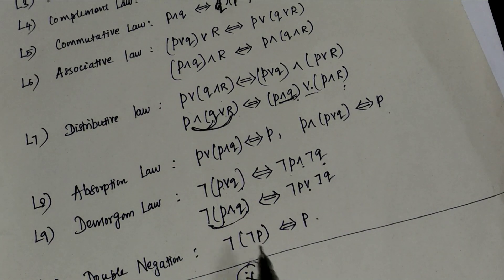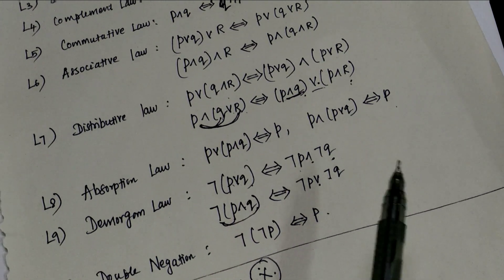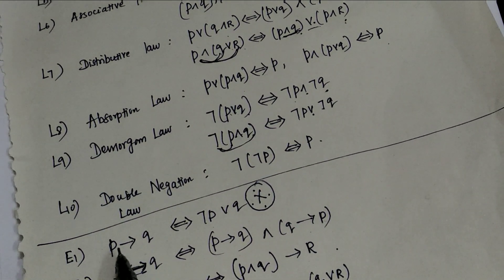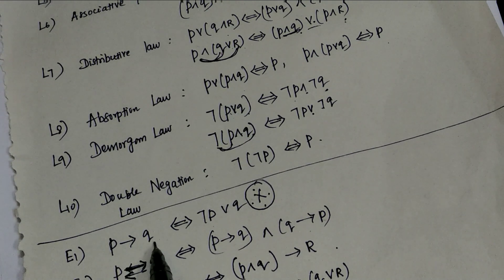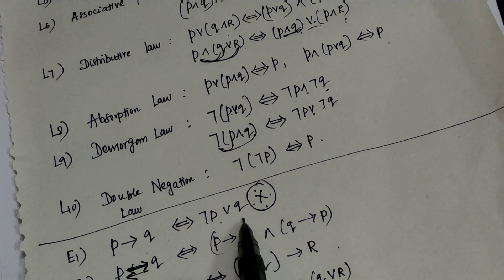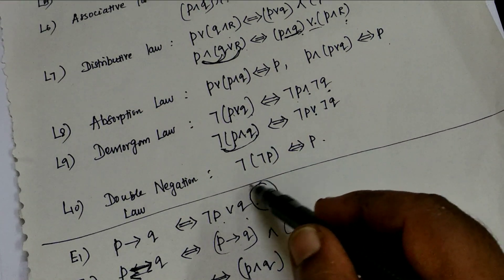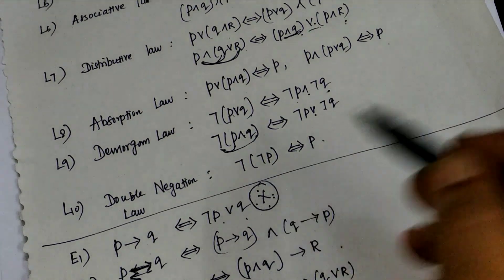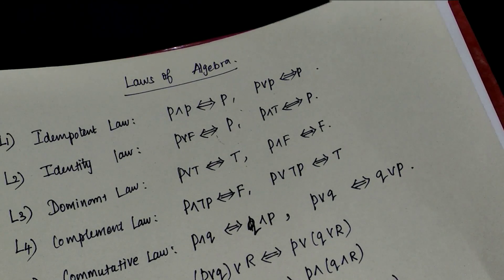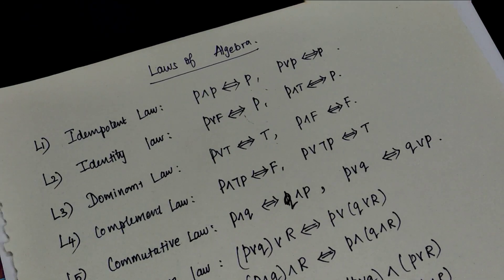Double negation law: double negation of P is P — the same statement. Next equivalence: P implies Q, that is, if P then Q, which equals negation P or Q. We are using this result frequently. By using these laws of algebra we will prove some implications.